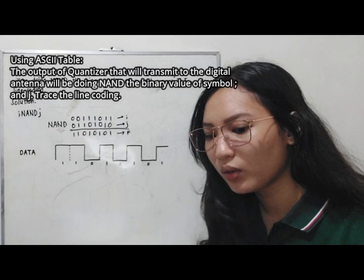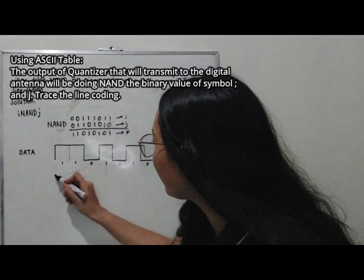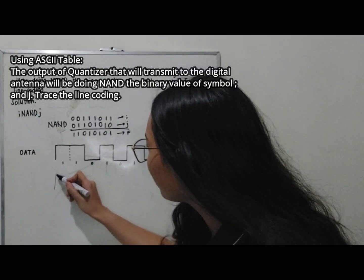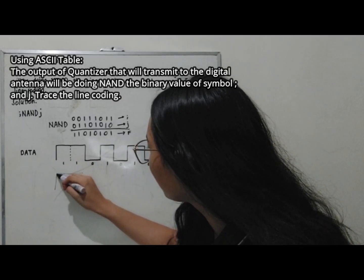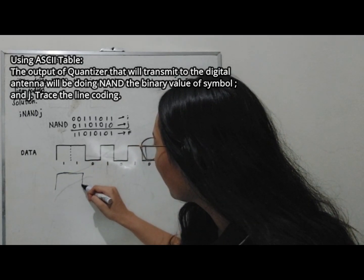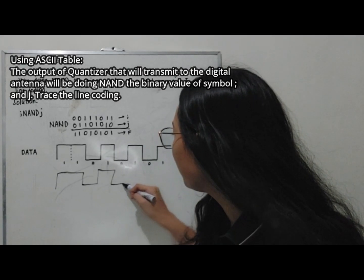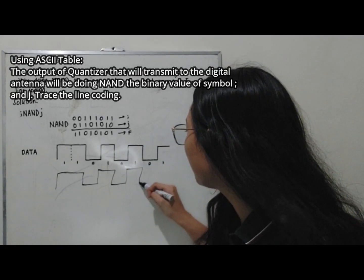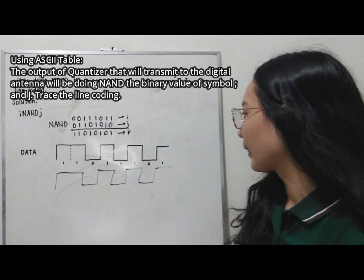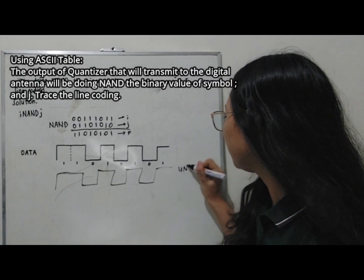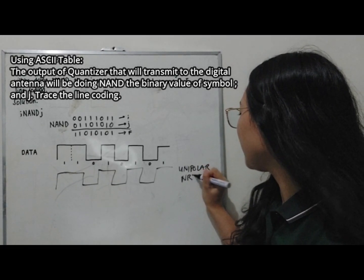For the unipolar NRZ, we represent the data as follows: a positive pulse for each 1, and no pulse for each 0. So for the sequence 1, 1, 0, 1, 0, 1, 0, 1, 0, 1 we have: positive pulse, positive pulse, zero, positive pulse, zero, positive pulse, zero, positive pulse, zero, positive pulse. This is the unipolar NRZ waveform.